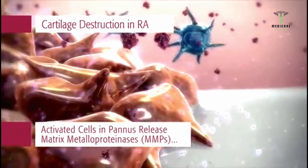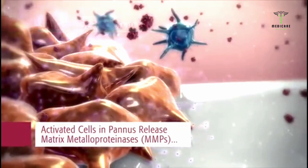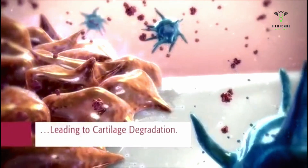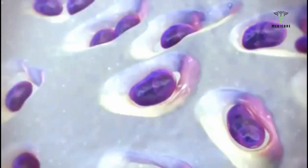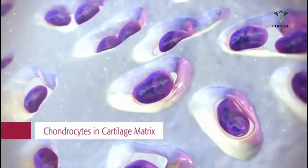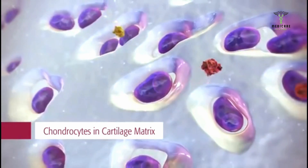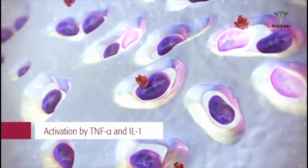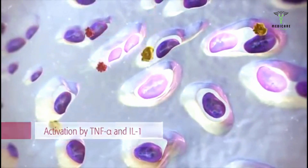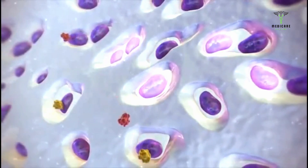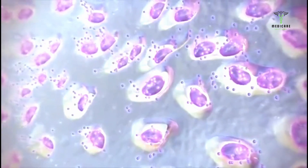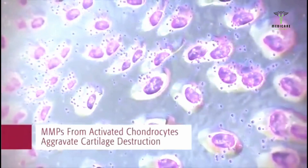Activated synovial fibroblasts and macrophages are a source of enzymes that degrade the cartilage matrix. These include MMPs, or matrix metalloproteinases. Thus, activated cells in pannus are key instigators of cartilage destruction. Chondrocytes are the main cellular component of cartilage and normally produce the extracellular matrix; however, in response to stimulation by TNF-alpha, IL-1, and other inflammatory mediators, chondrocytes become activated in the rheumatoid joint.